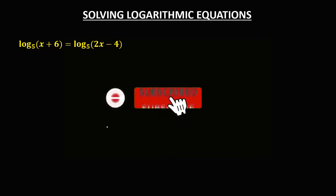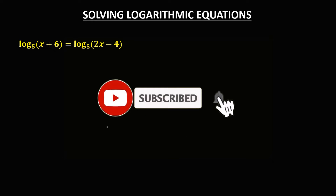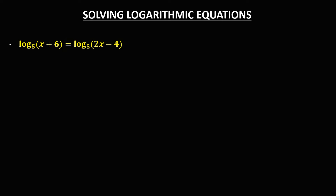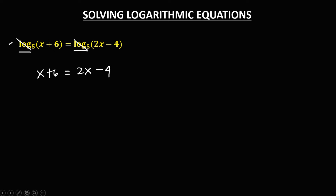Okay, so let's solve this problem. In solving logarithmic equations, for this given, since there is a log on both sides, just cancel. So we have x plus 6, then equals 2x minus 4.